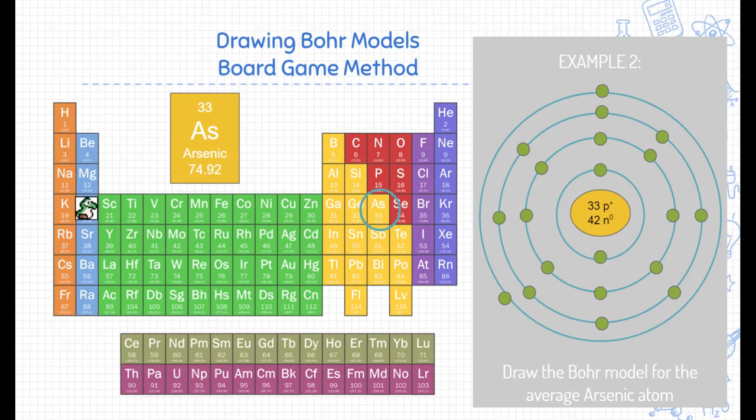So these electrons—one, two, three, four, five, six, seven, eight, nine, and ten—actually go on the third ring, not the highest energy level. So that's the special rules we need to be aware of.